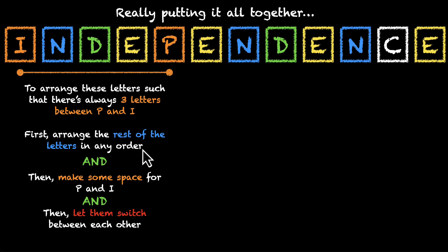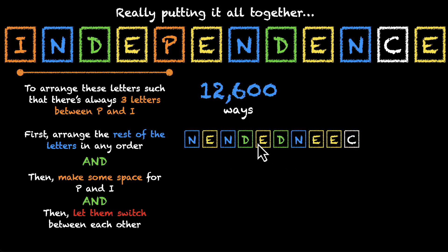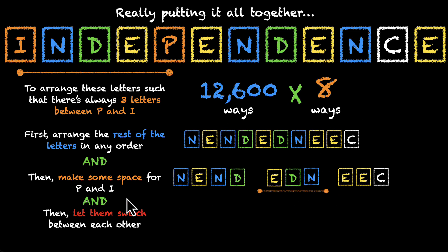This first one, arranging the rest of the letters, well, we have already done that. We have 12,600 ways to do this. But this is only the first part. We have to do this, and we have to make some space for P and I. For every single one of these 12,600 arrangements, we have eight ways to make space for P and I.